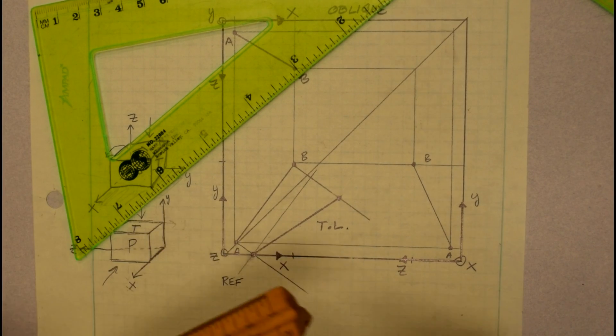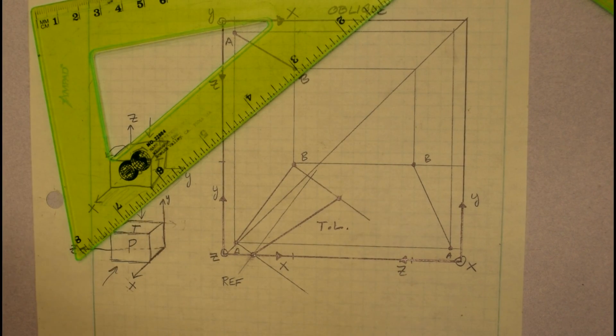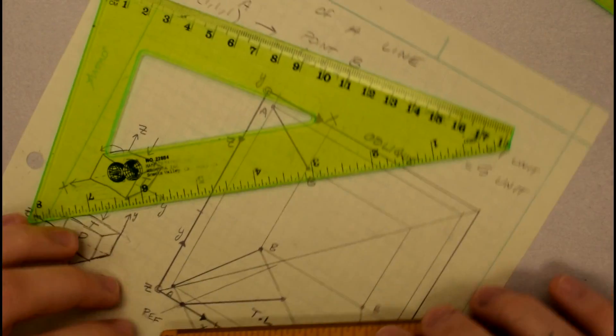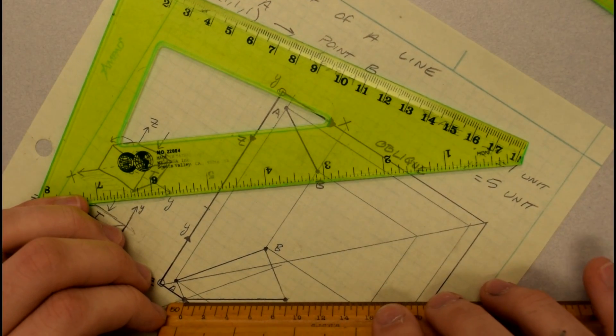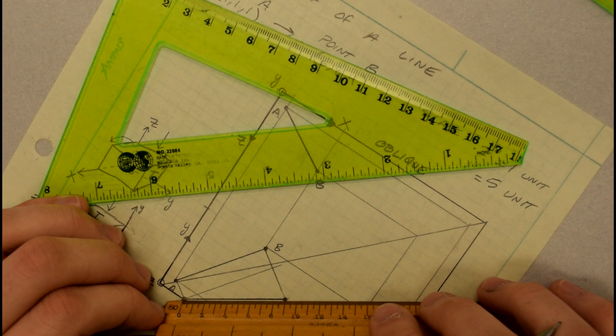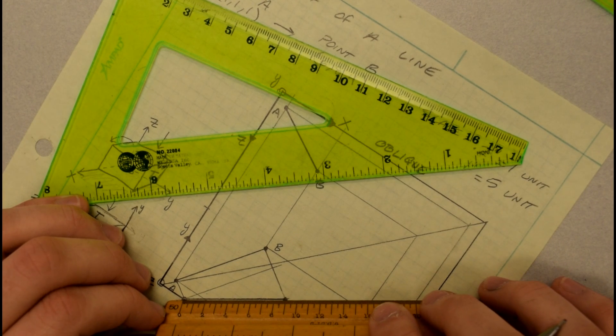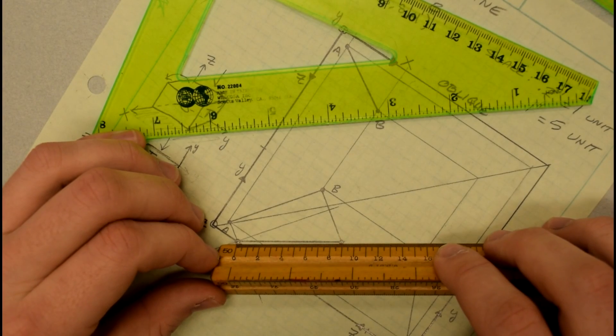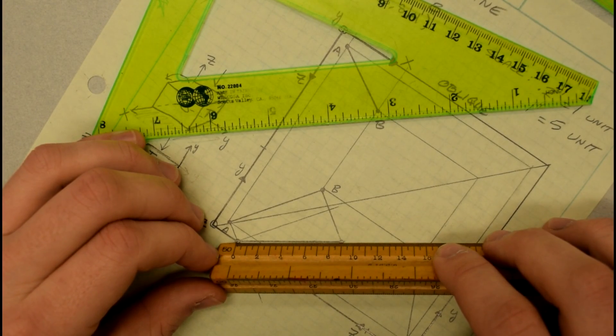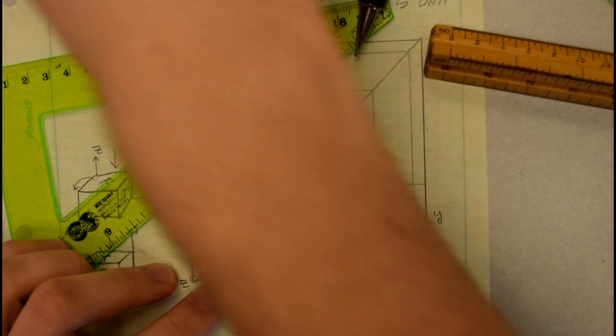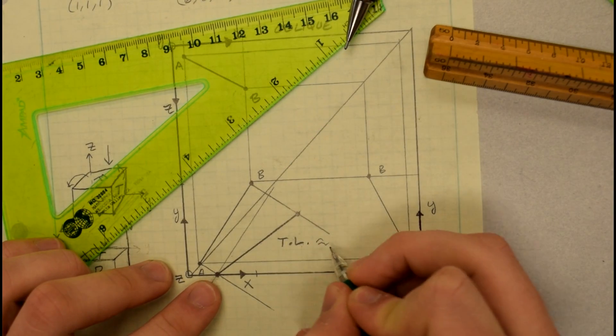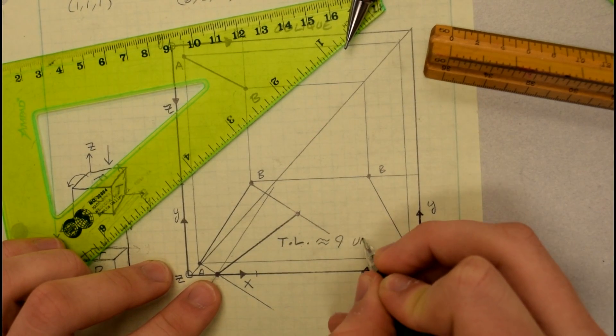So I will check this with my scale to see what I think the true length is. So it looks like, okay, I'm right about 9, maybe slightly over 9. So that's just my scale, it looks like it's about 9 units long. So I'll say true length is approximately 9 units.